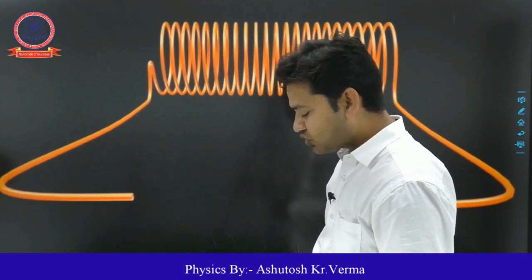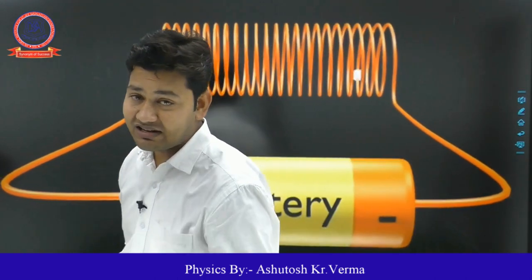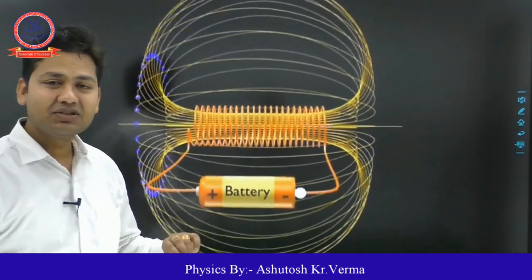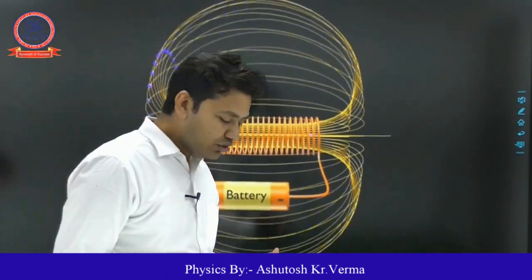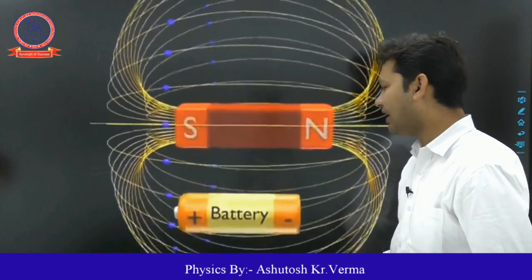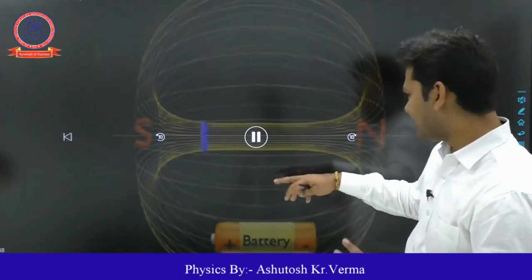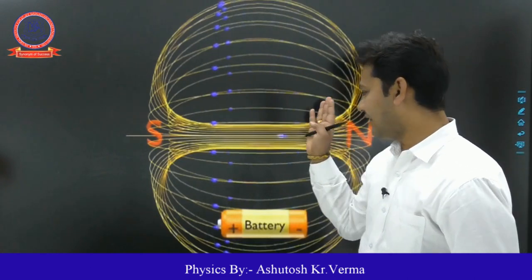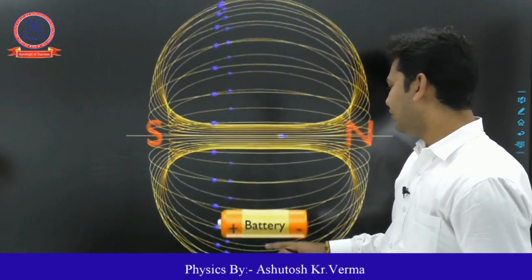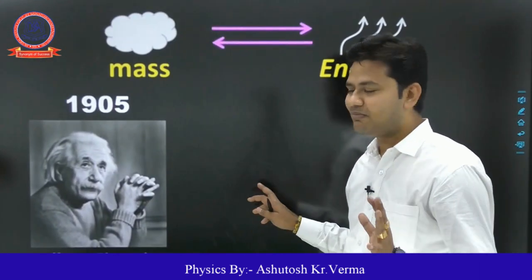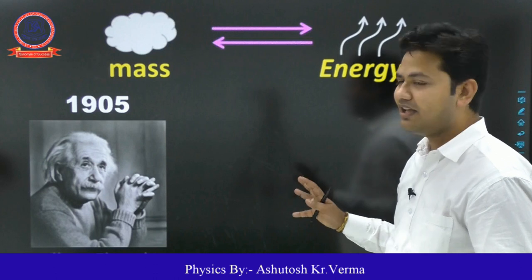If we talk about a solenoid, when we connect a battery and current flows through it, the solenoid starts to work just like a magnet. It becomes a north pole and a south pole. When we tell students that when current flows it becomes a north pole and a south pole, and the magnetic lines of force are produced, these things become a little bit clearer.